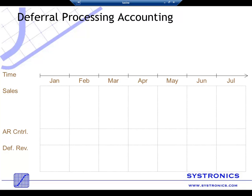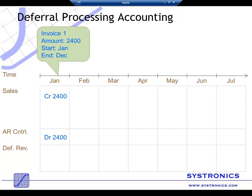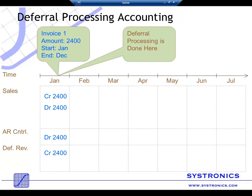For example, we have an invoice on January 1st for $2,400. This is a transaction where $2,400 will be credited to your sales account and debited to your AR control. In the Revenue and Expense Deferral application, this amount will first be moved from the revenue account to the deferred revenue account.